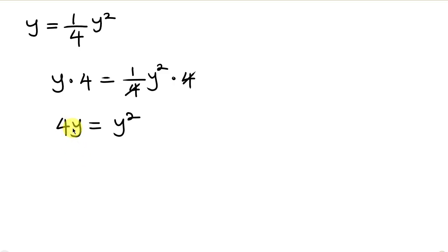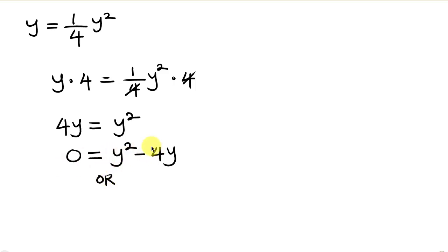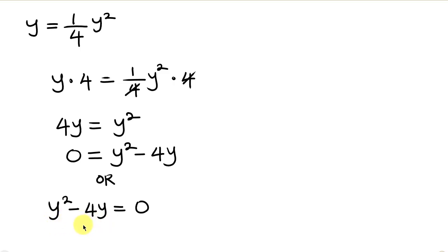We move 4y to the right hand side, giving us 0 on the left equal to y squared minus 4y. Flipping the positions, we write y squared minus 4y on the left equal to 0. Factoring out y gives y times (y minus 4) equals 0.